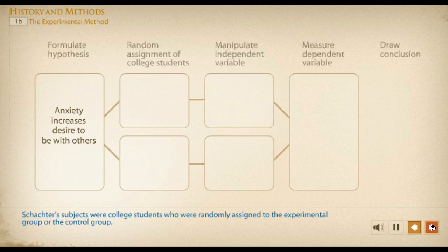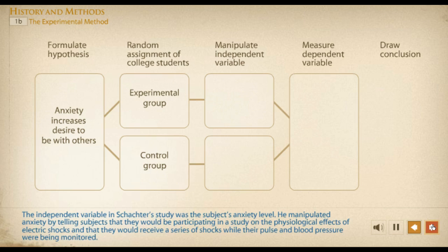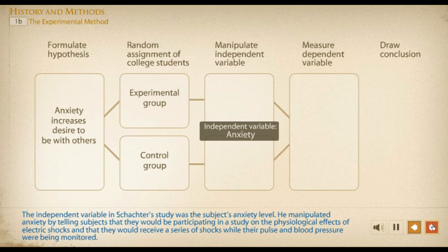Schachter's subjects were college students who were randomly assigned to the experimental group or the control group. The independent variable in Schachter's study was the subjects' anxiety level. He manipulated anxiety by telling subjects that they would be participating in a study on the physiological effects of electric shocks and that they would receive a series of shocks while their pulse and blood pressure were being monitored.